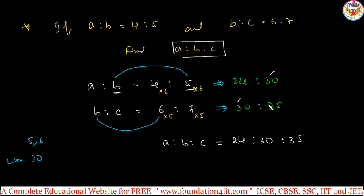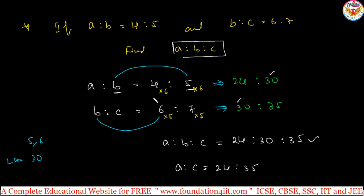This is the method to apply when a:b and b:c are given. If they only ask for a is to c, the answer is 24 is to 35 taken from the combined ratio. Do not take 4 and 7 directly because 5 and 6 are not the same — you must make them equal by taking the LCM first. Then from this combined data you can derive the full ratio series.